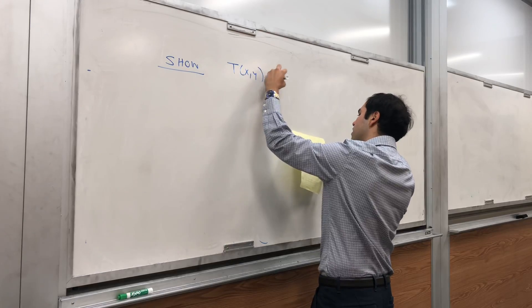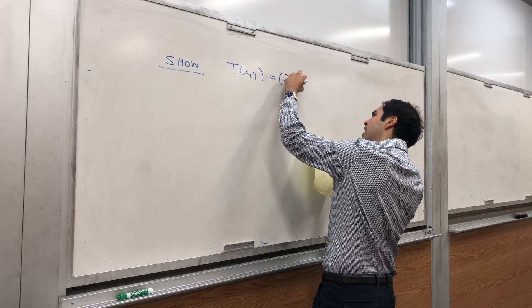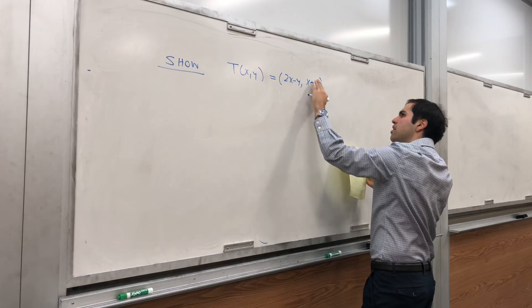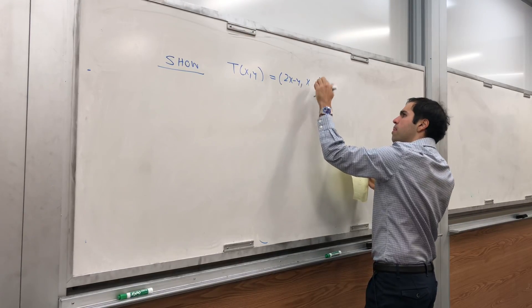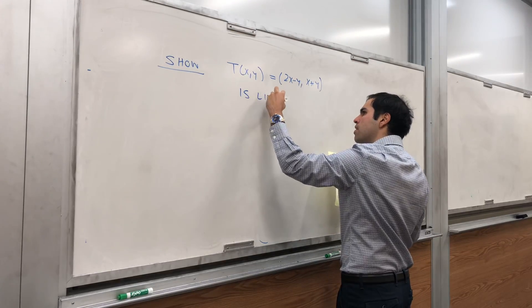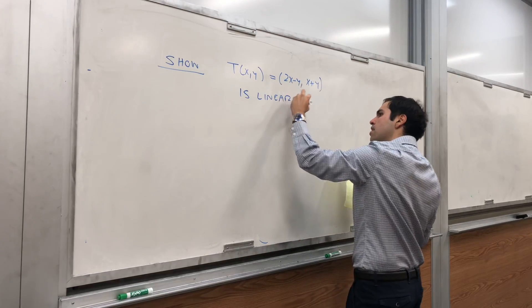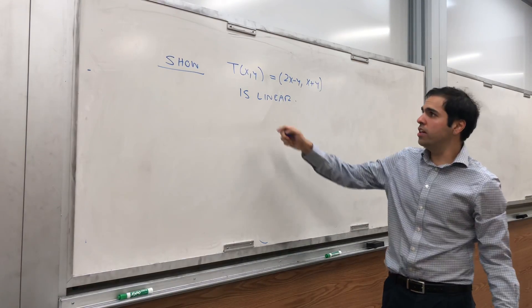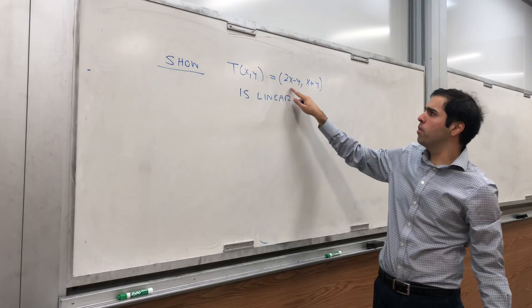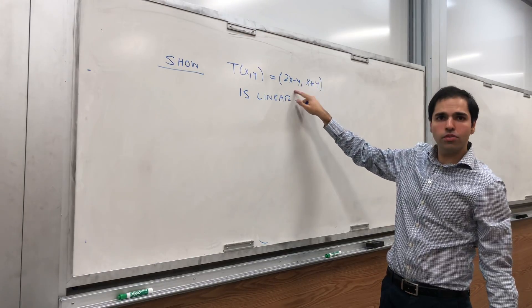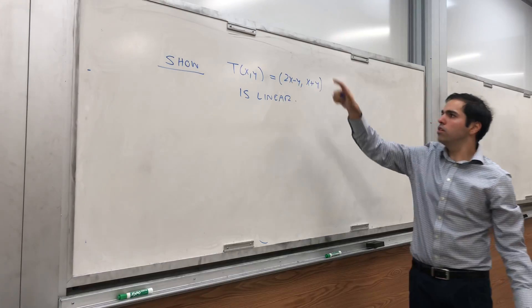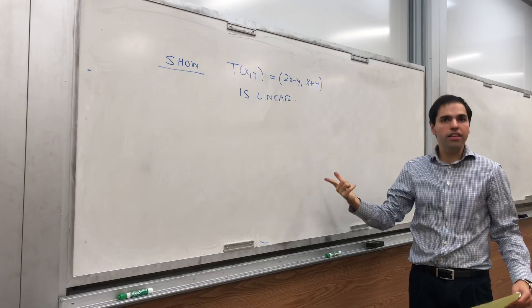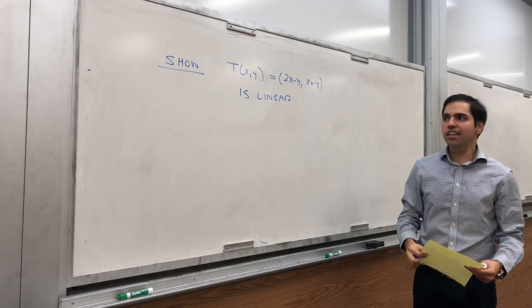Namely, T of (x, y) equals (2x minus y, x plus y) is linear. So what this is, it's a transformation, a function from the plane, from two variables to the plane back, from R2 to R2, that sort of shears and flips and stuff. And I want to show you rigorously from the definition why this is a linear transformation.